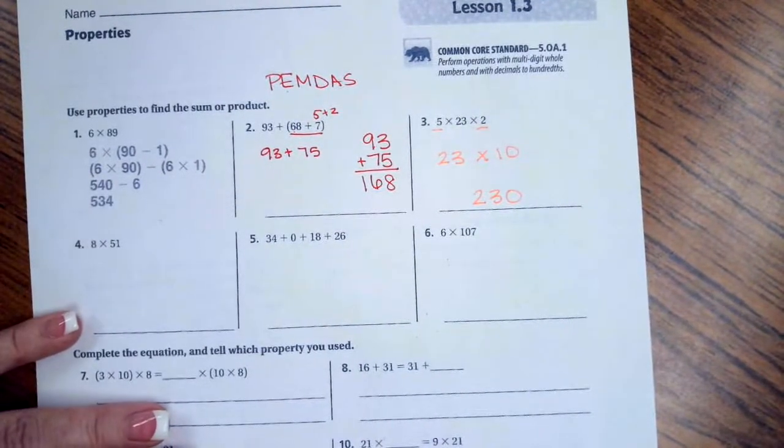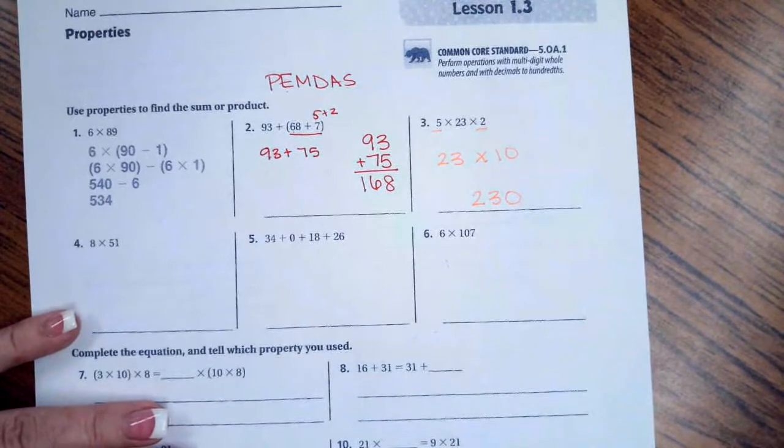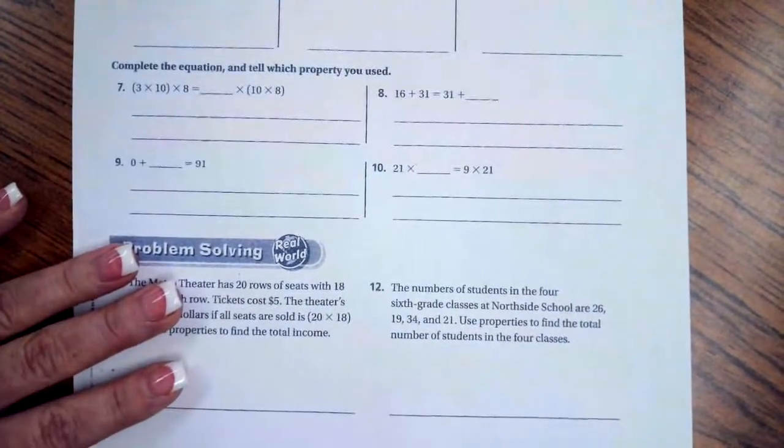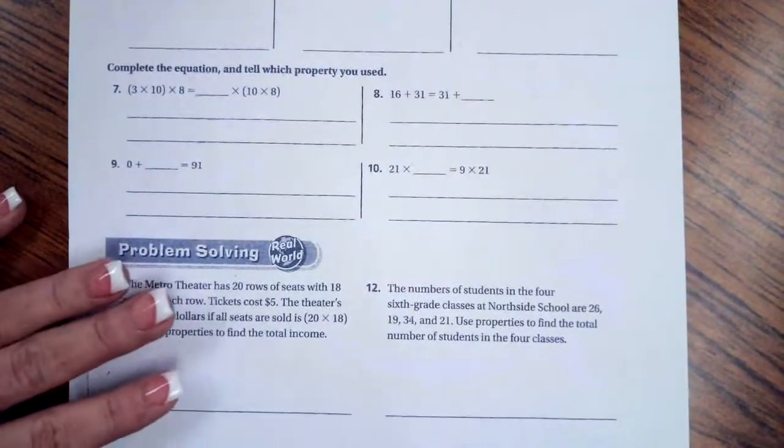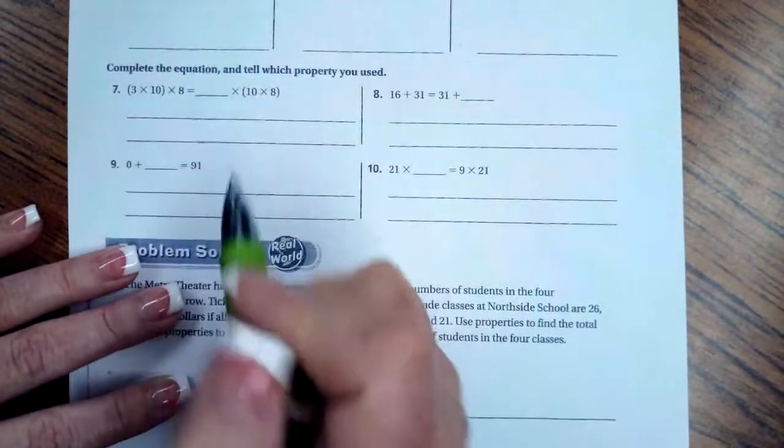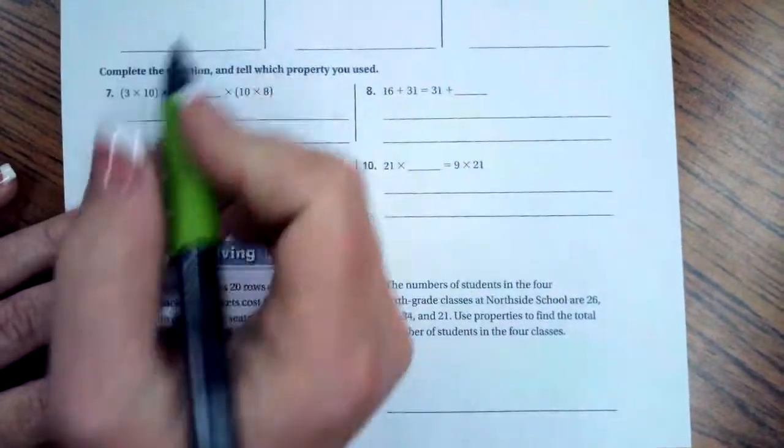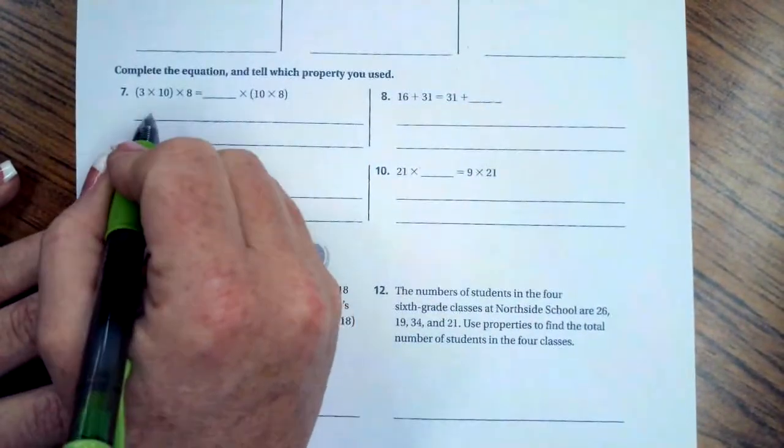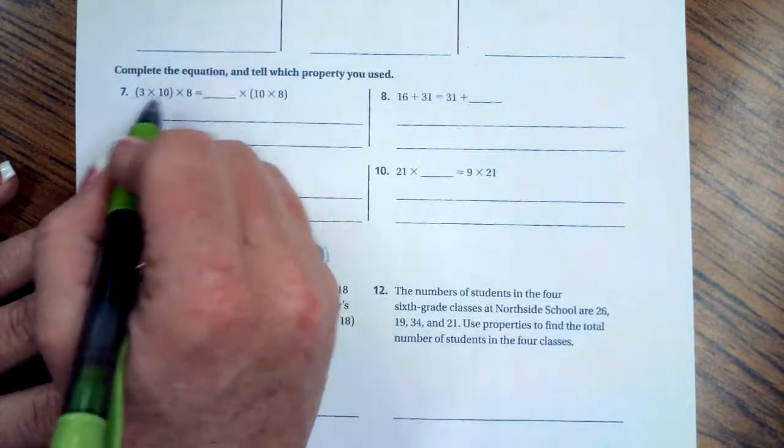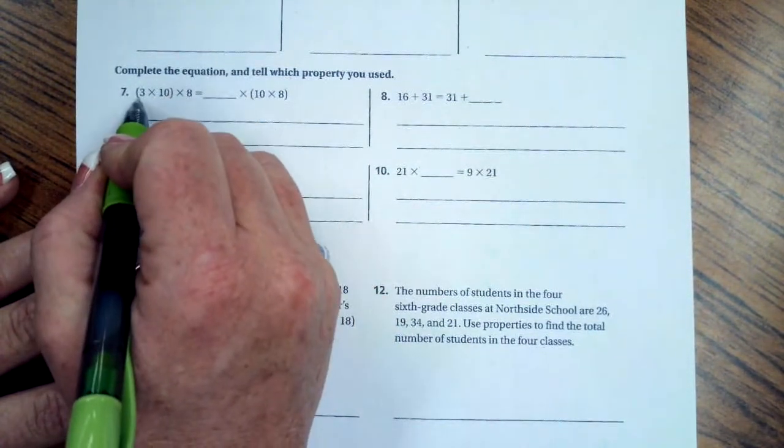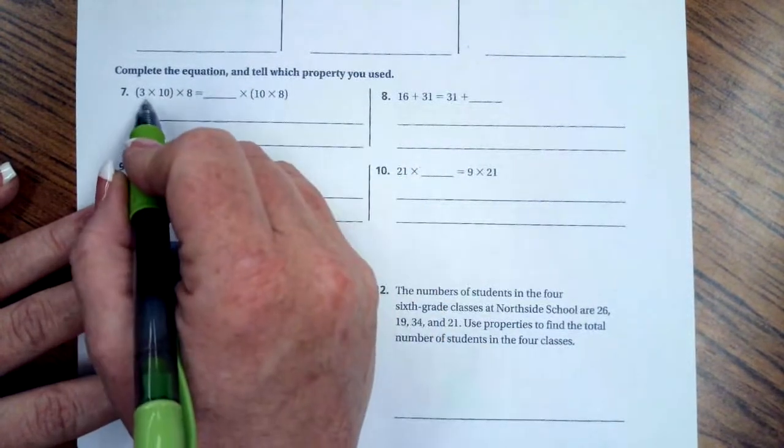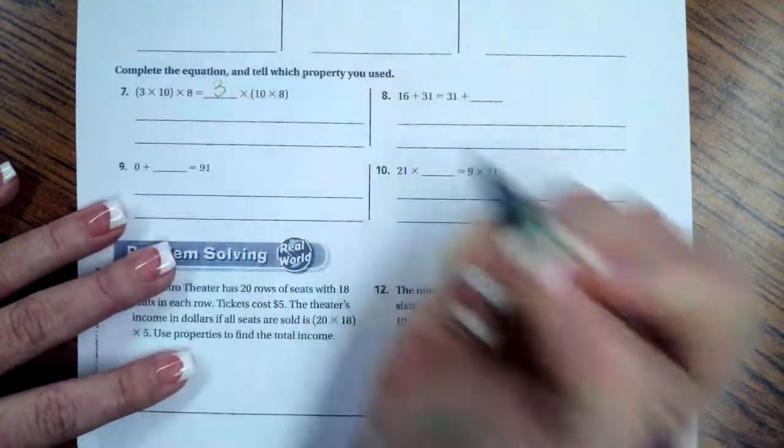All right, so you guys are going to go ahead and do through number 6. You totally can. I believe in you. And we're going to go down and do number 7. So number 7, we have parentheses. So we need to do that. So it wants us to fill in the blank. So what number is missing from this side of the equal sign? This we have 3, 10, and 8. Here over here, we have 10 and 8. I'm missing my 3. I'm going to fill it in with 3.